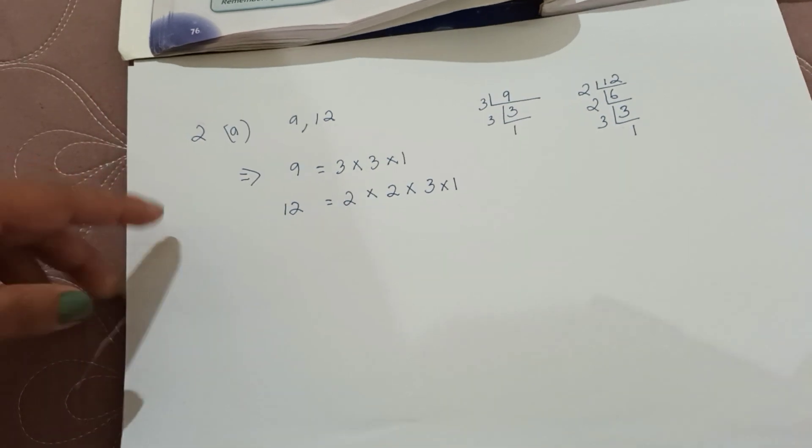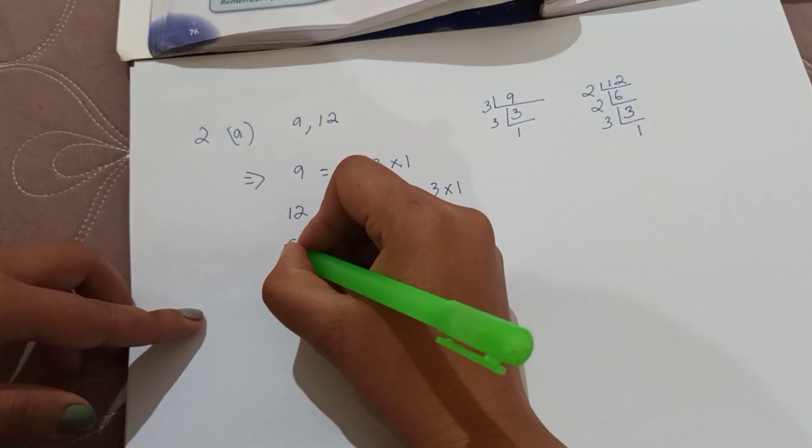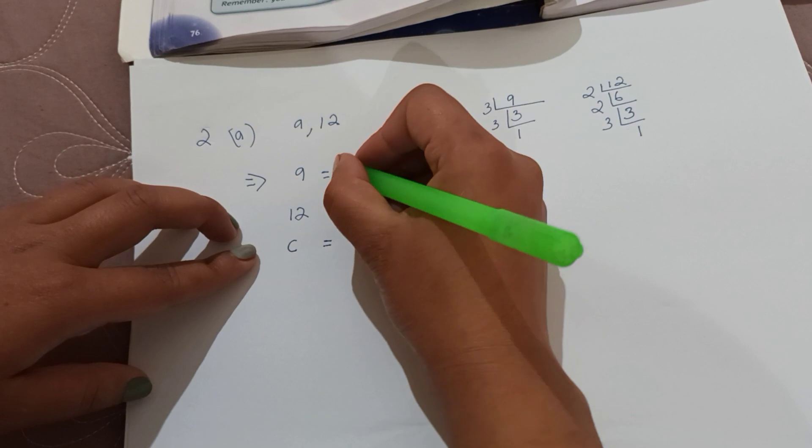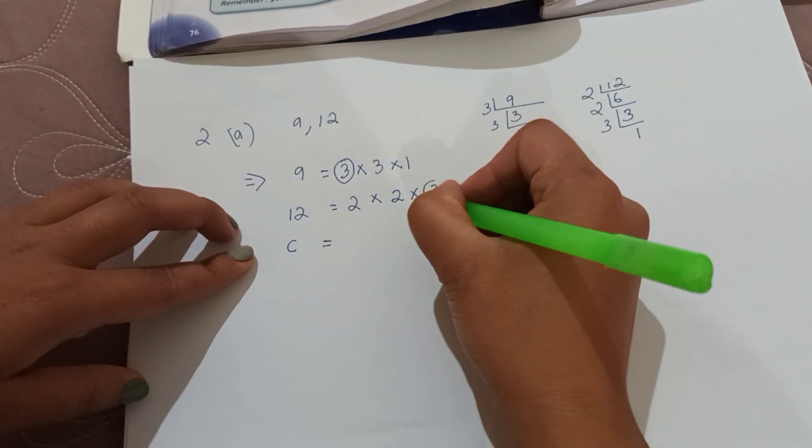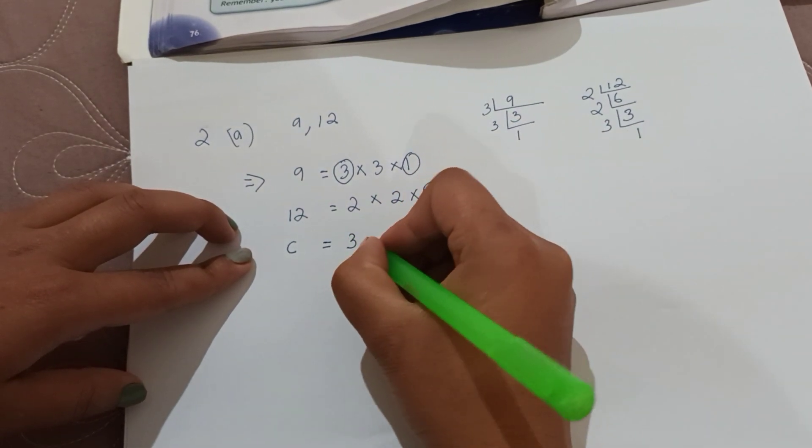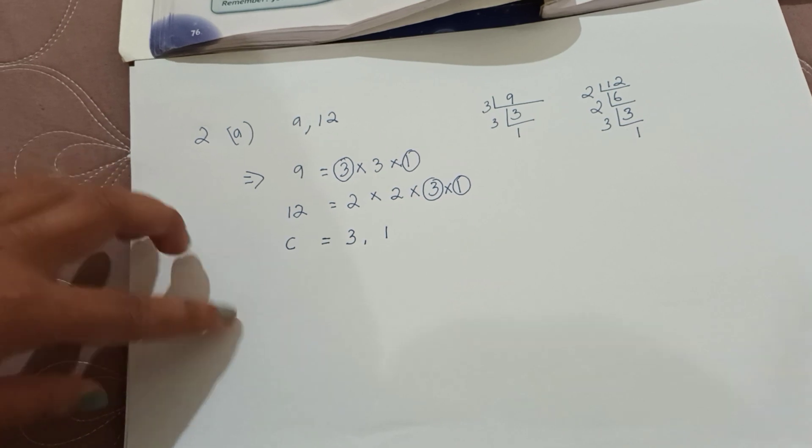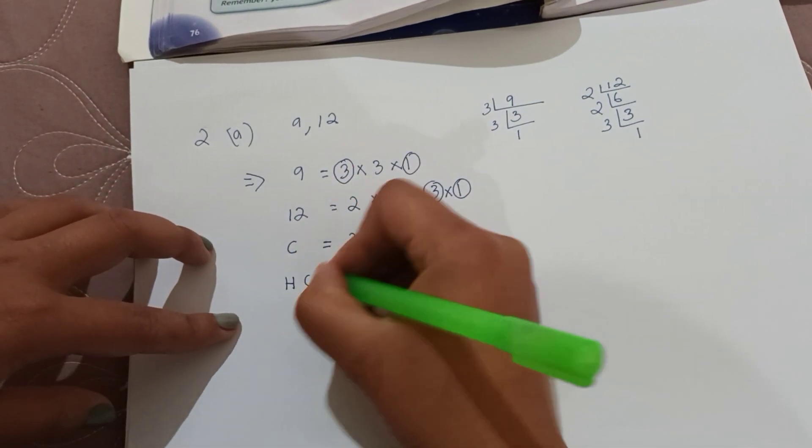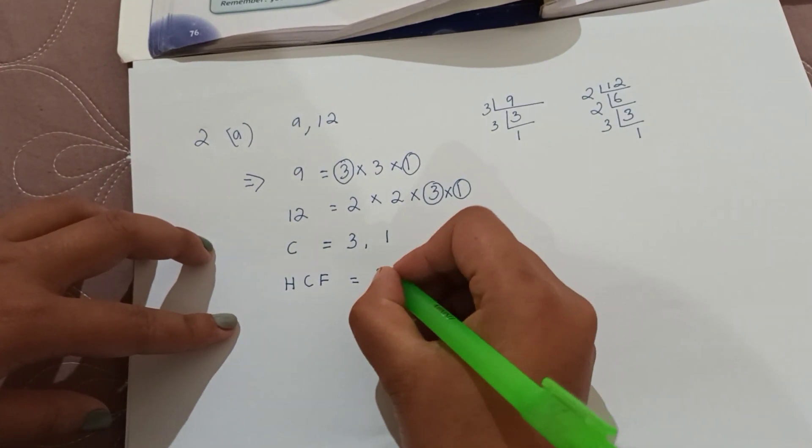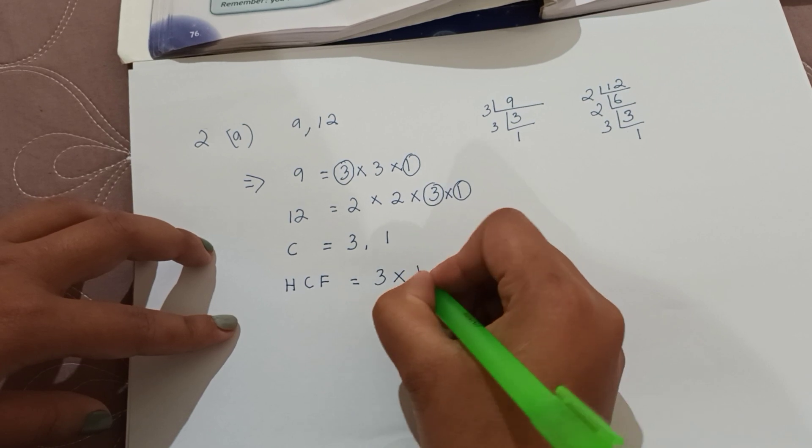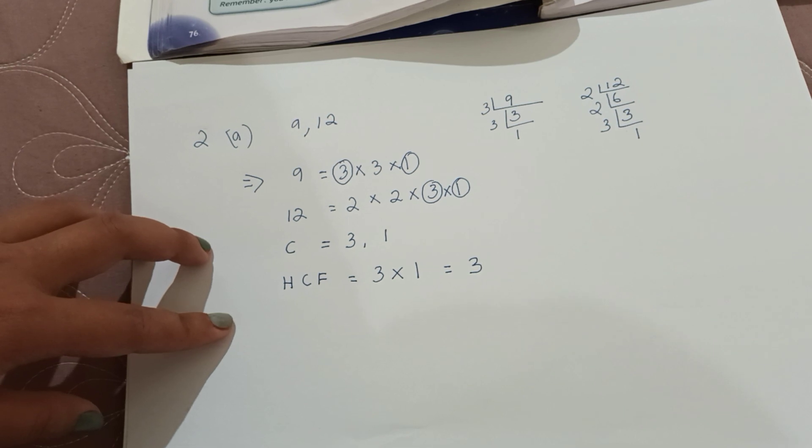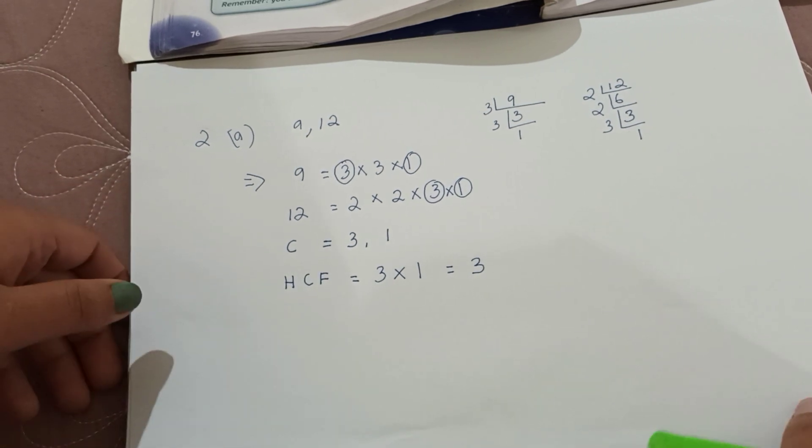Now we look at which numbers are common. 3, 1 are common. 3 common, 1 common. 3, 1 are common. So HCF, we multiply the common ones together. HCF is 3 into 1 is equal to 3. HCF is multiply the common ones. 3 into 1 is equal to 3.